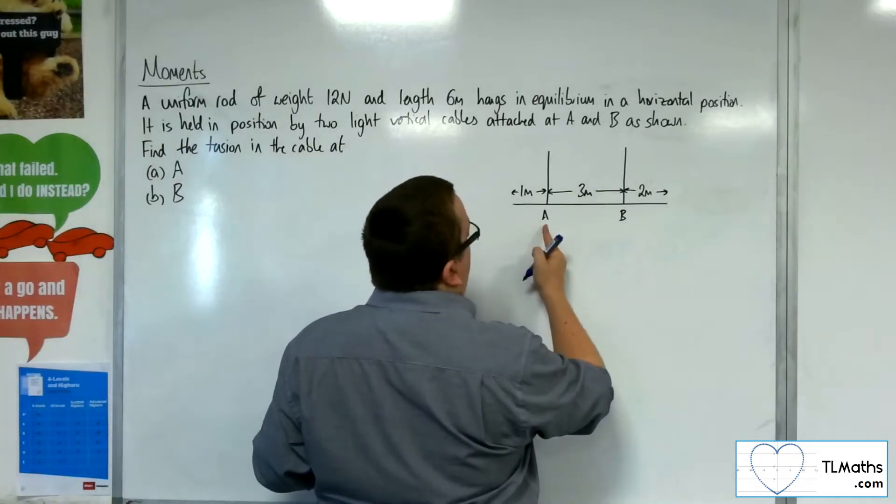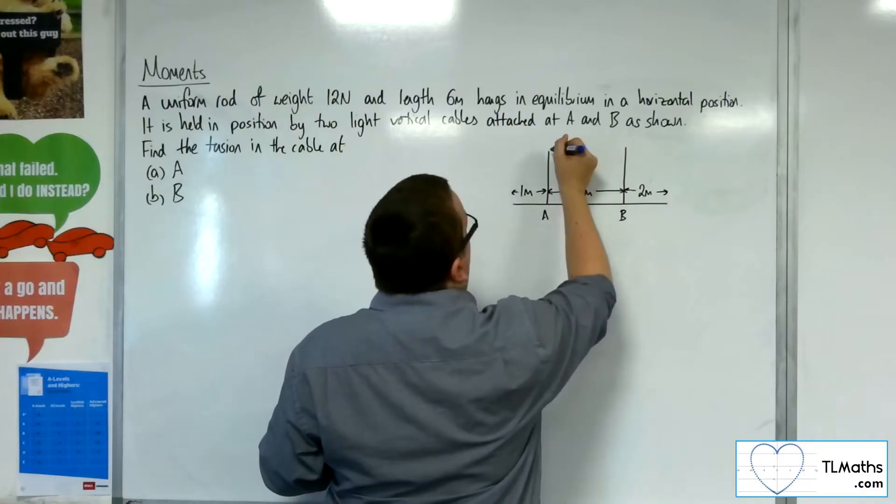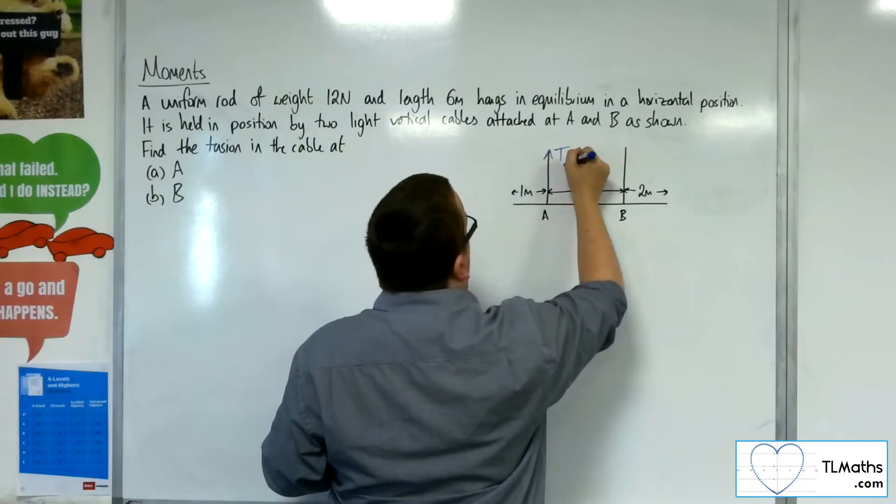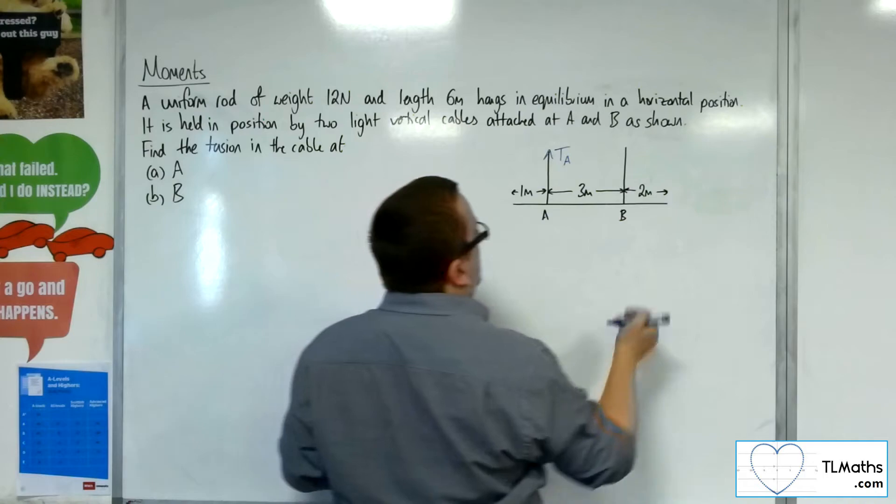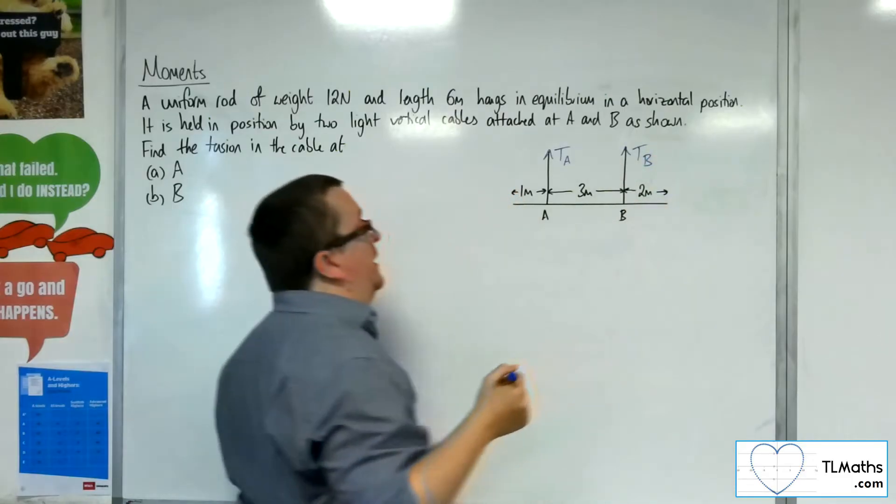At point A, we've got this vertical cable, and so there's going to be tension in that cable. I'm going to call that T_A. Point B will also have tension in the cable. I'm going to call that tension B.